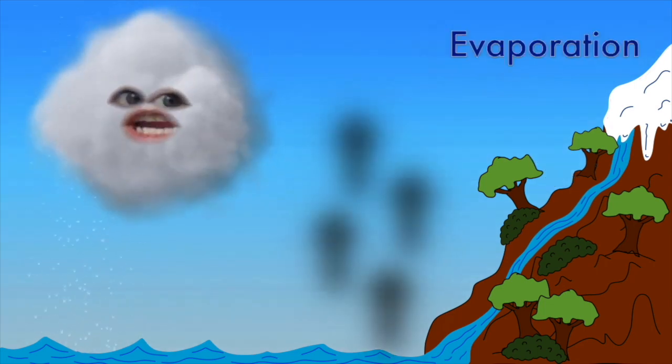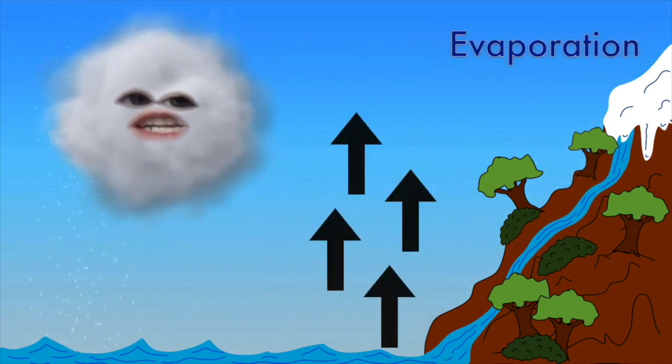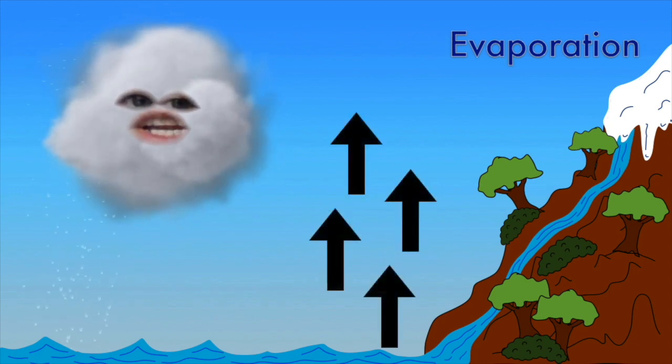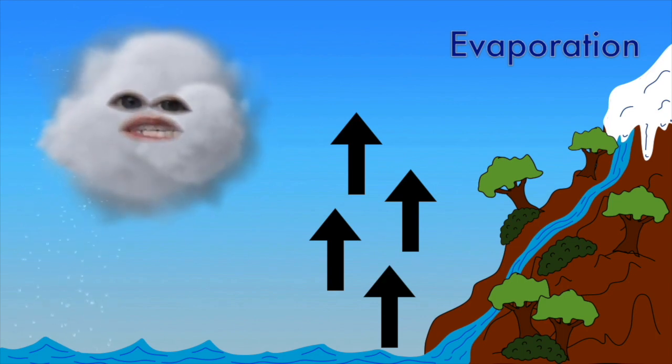The third stage is evaporation. This is when the water that has fallen to the ground dries out and changes from a liquid to a gas. The gas then rises back up into the sky.